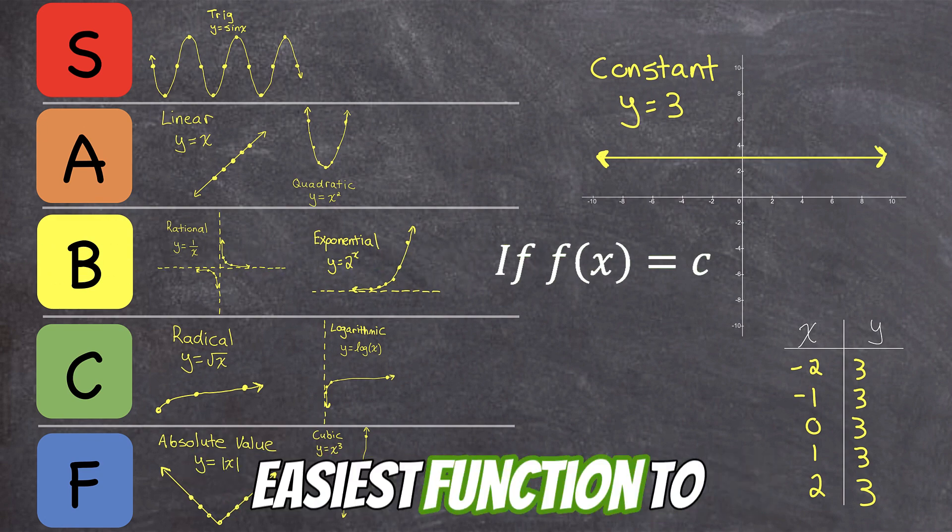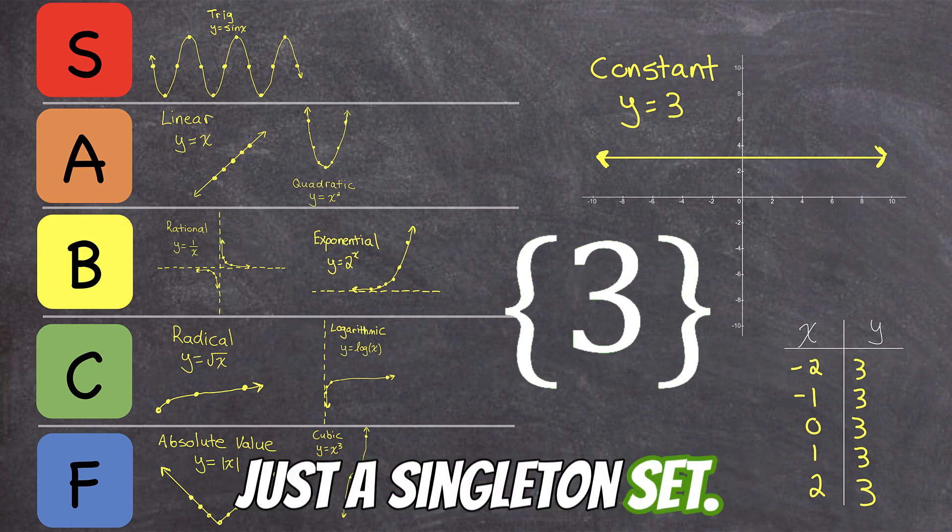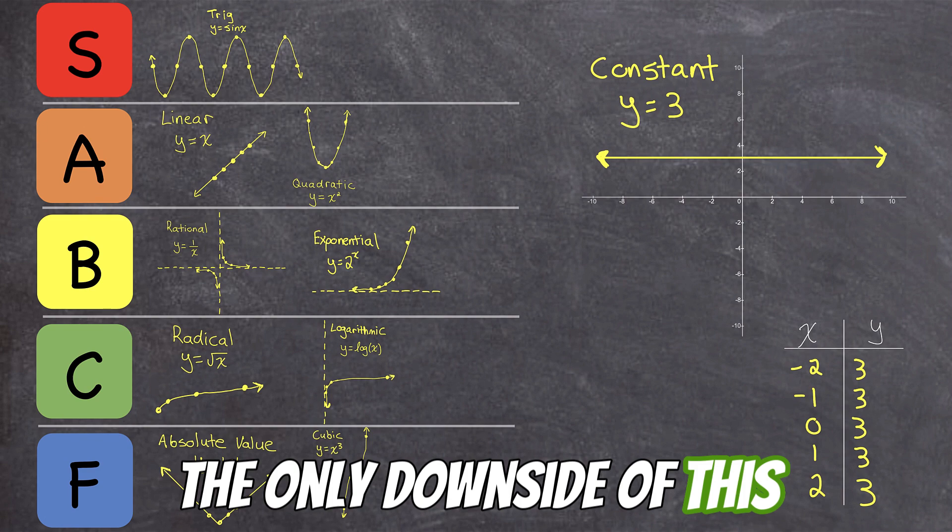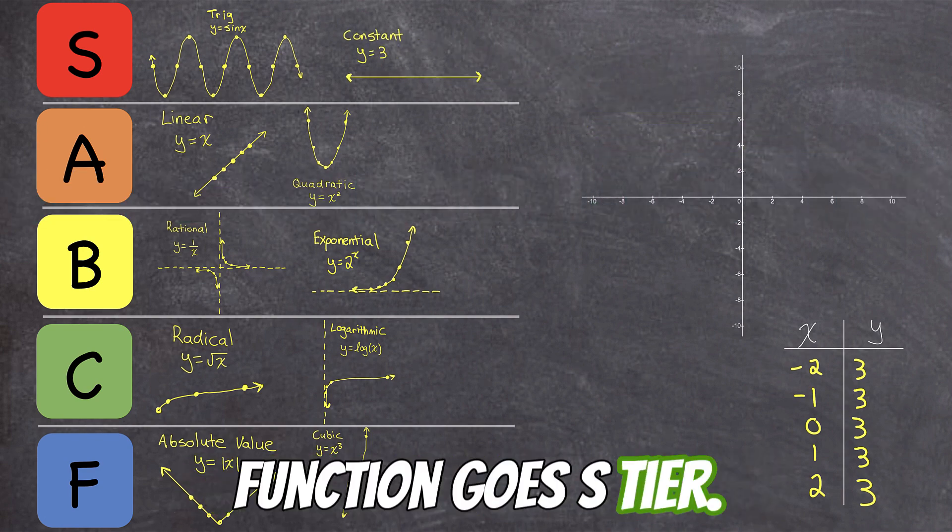It's the easiest function to differentiate. It's very predictable. The range is just a singleton set. The only downside of this function I can think of is that you need a ruler to graph it. But still, this function goes S-tier.